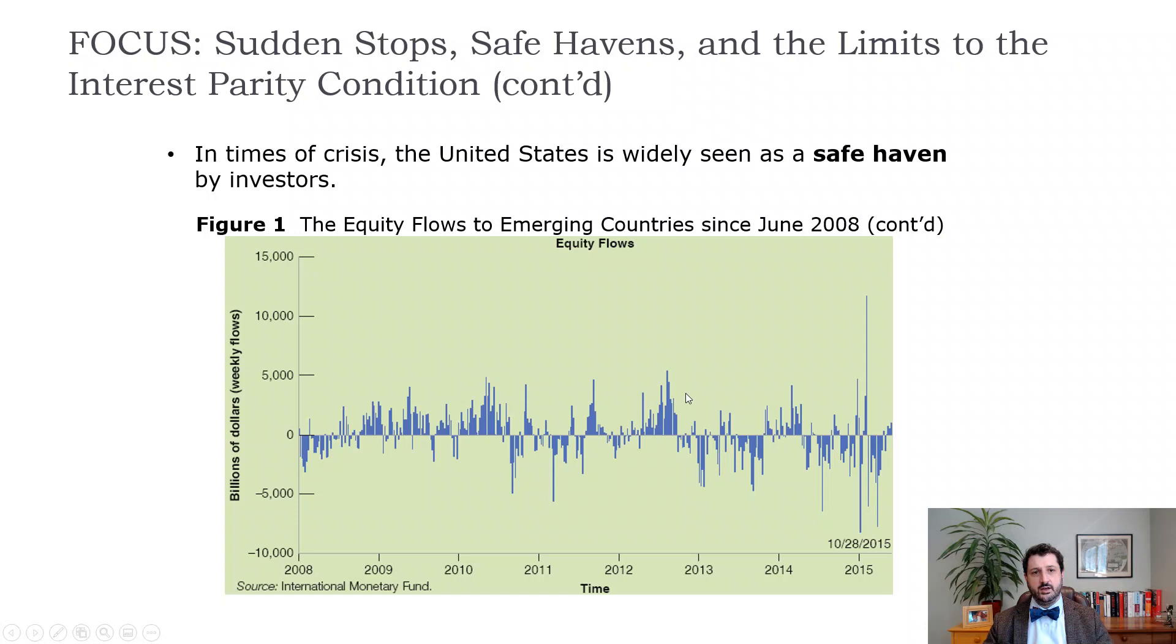That's often because the United States is looked on as the least risky investment internationally. If you're pulling money out of an emerging economy because you're concerned about risk, either exchange rate risk or default risk, or some other type of risk, often the money goes into the United States.